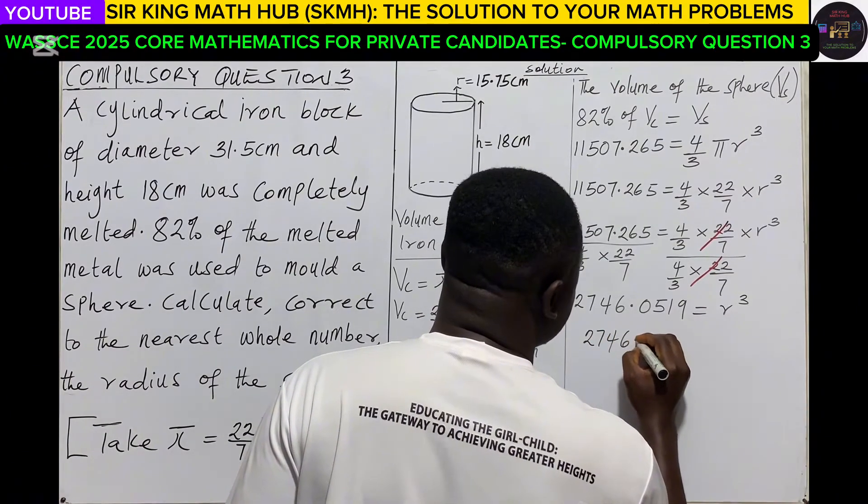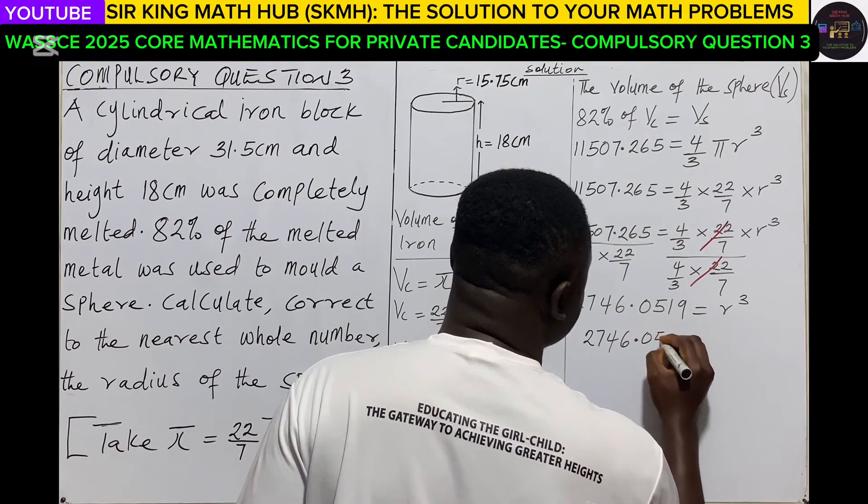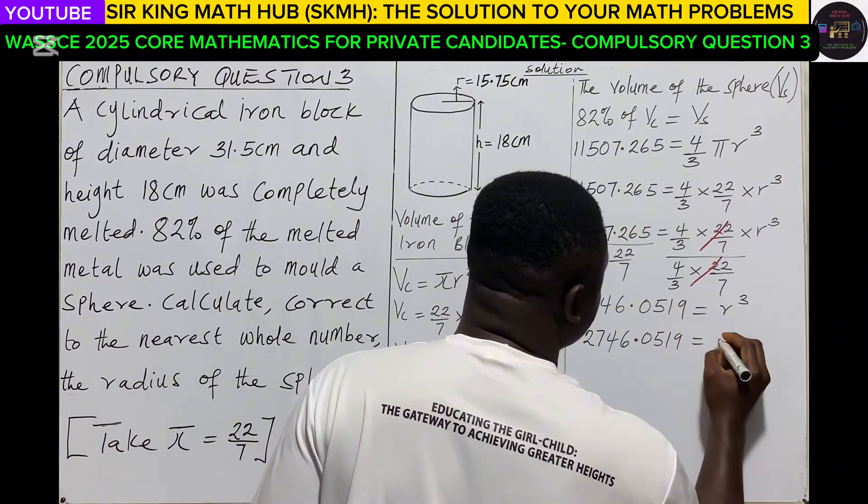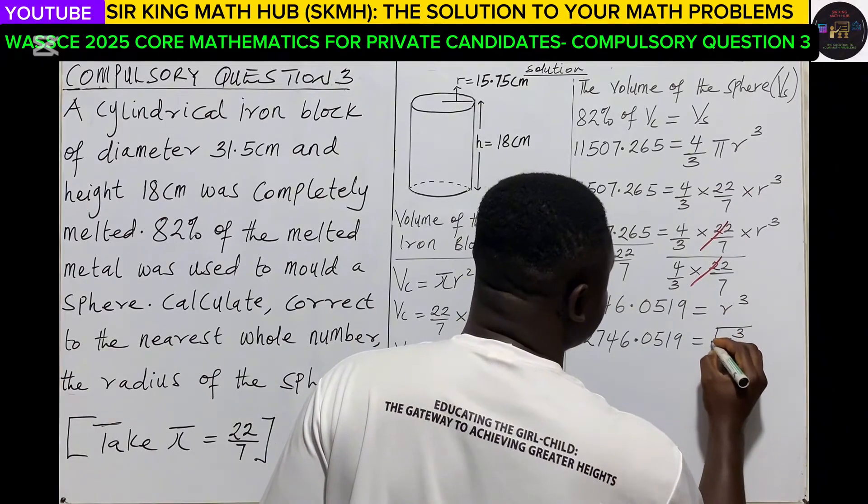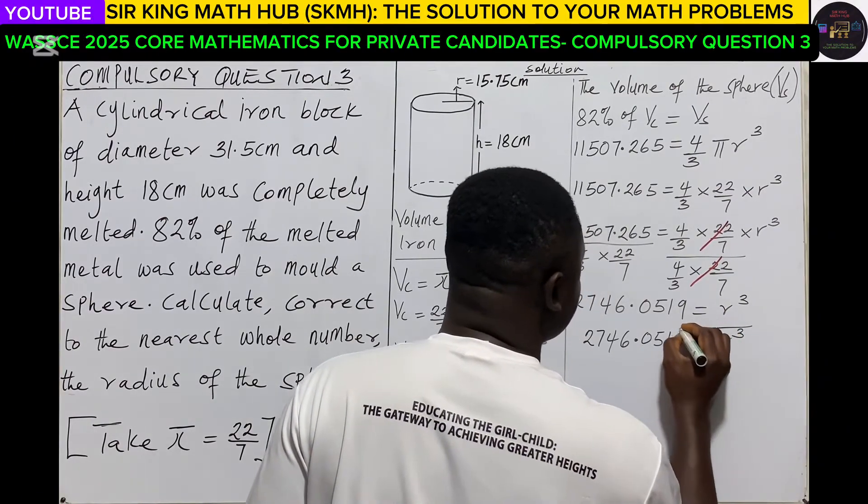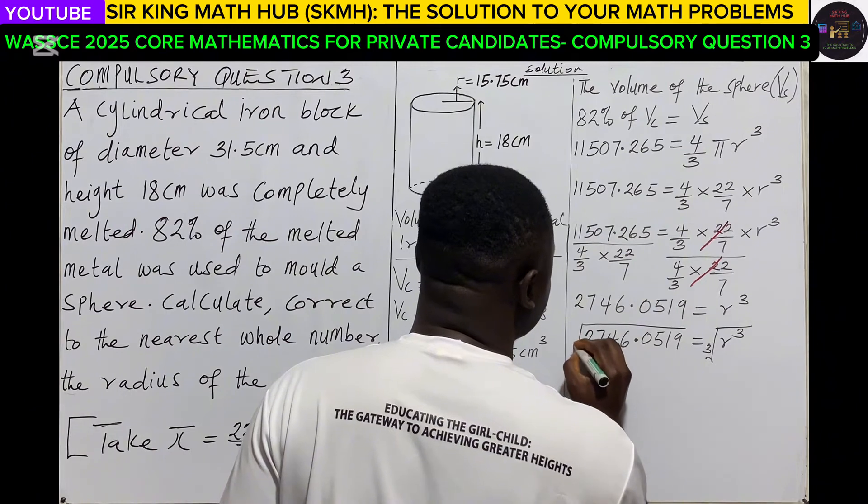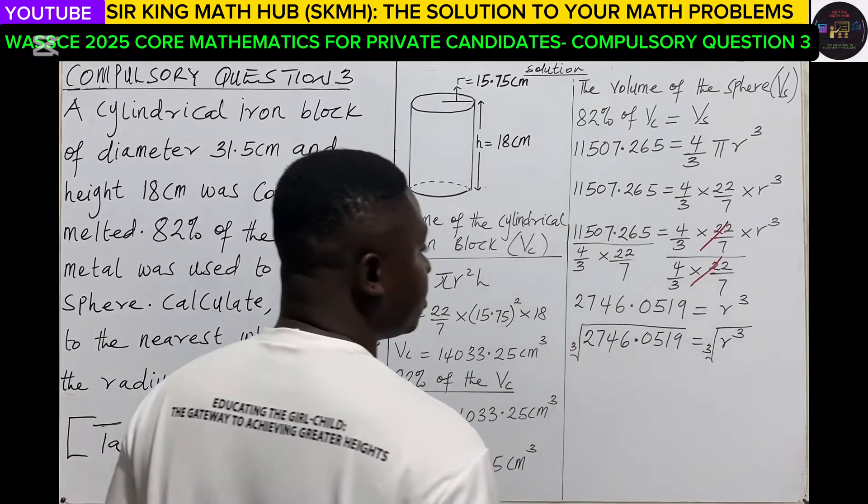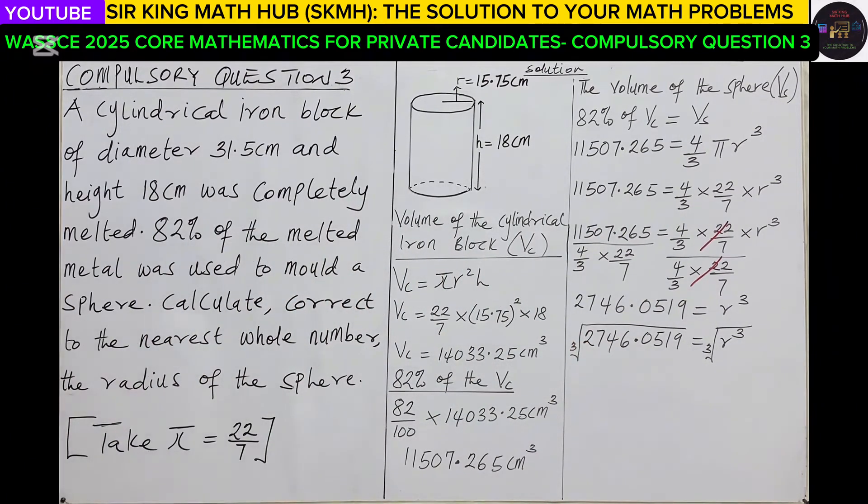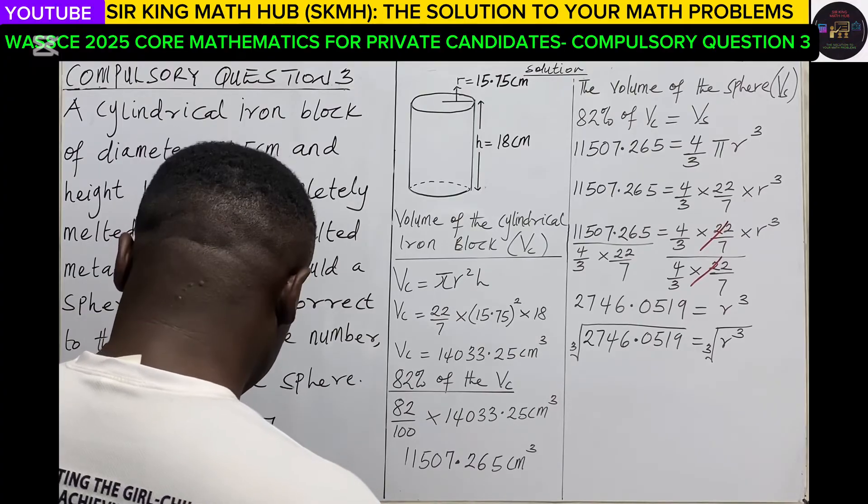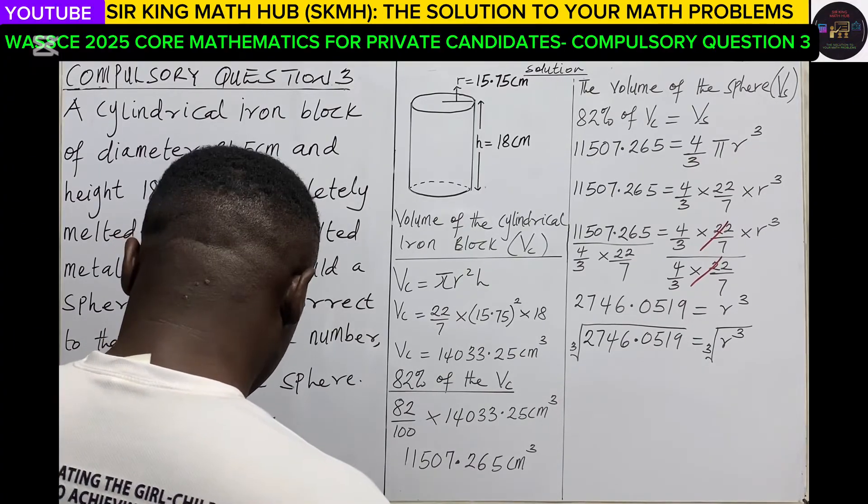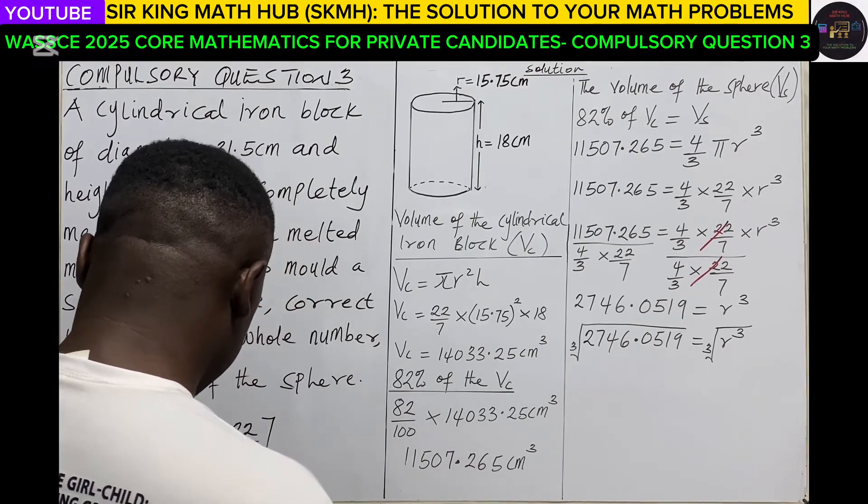We need to take the cube root on both sides. We take the cube root here, we take the cube root here. So again, using our calculator, let's find the cube root of 2746.0519.